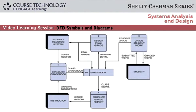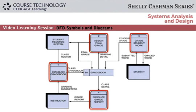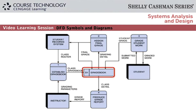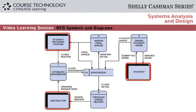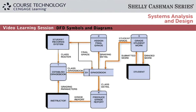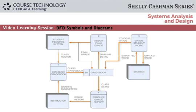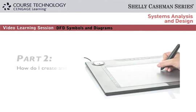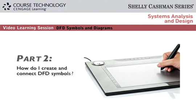Here's a typical DFD. The rounded rectangles show processes. The flat rectangle shows a data store. The shaded boxes show entities. And the arrows show data flows. First, let's get familiar with DFD symbols. We'll start with processes.